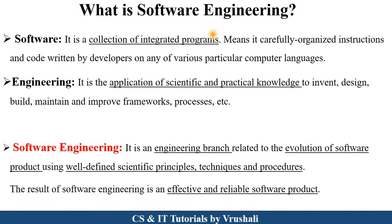The first point is: what exactly is software engineering? Basically, the term software engineering is combined from software and engineering. Software is a collection of integrated programs — a developer develops a particular software using a particular computer programming language as per the customer need. Engineering means applying different scientific and practical knowledge; we learn about invention, design, build, maintenance, and improving frameworks and processes.